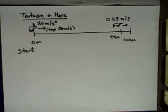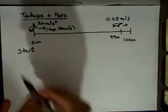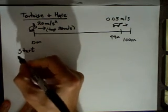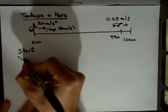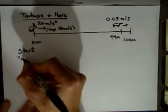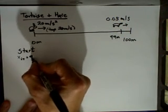So in this problem, we can see there are various points in the problem where we know various pieces of information. So at the start, we know that, for instance, the initial position of the tortoise, x initial of the tortoise, is at 99 meters.